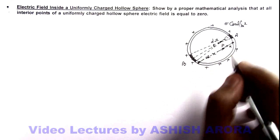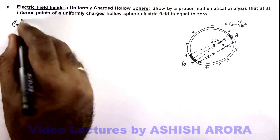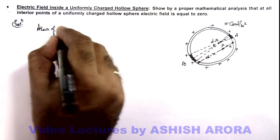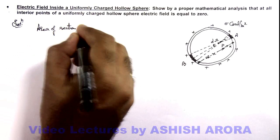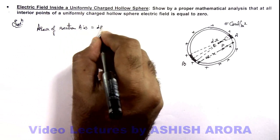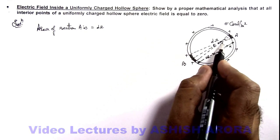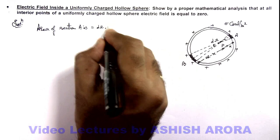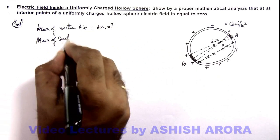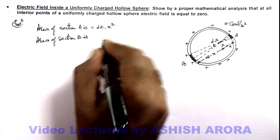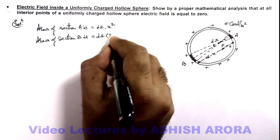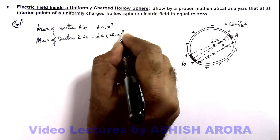Now in this situation, in the solution we can write the area of elemental section A. This area we can write as dω, which is the solid angle subtended by this small element, multiplied by x squared. Similarly, if we calculate the area of section B, which is also subtending the same solid angle at point P, its area will be dω multiplied by (2R minus x) whole squared.